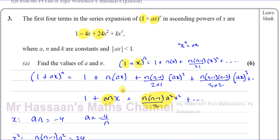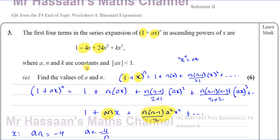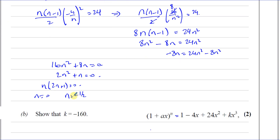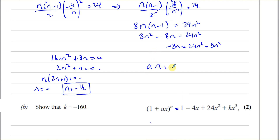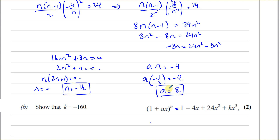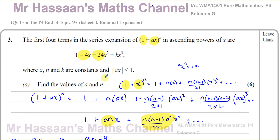We know n can't be 0, because if n were 0 the whole expression would just equal 1. So n = −1/2. Therefore, since a·n = −4, we have a × (−1/2) = −4. Multiplying both sides by −2 gives a = 8. So n = −1/2 and a = 8.